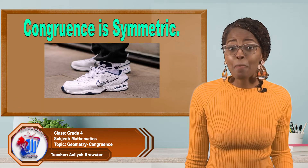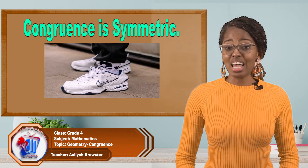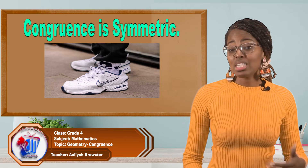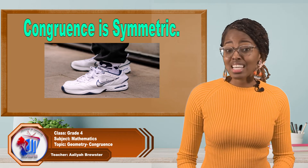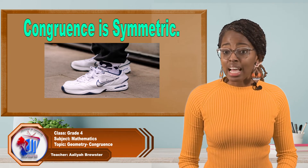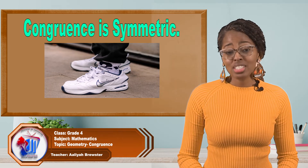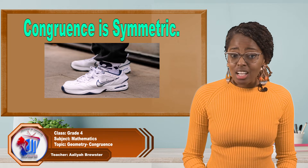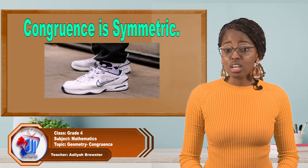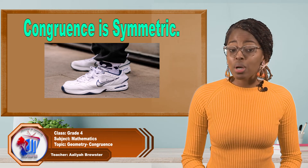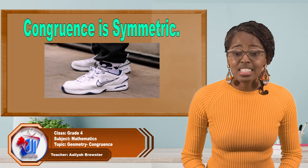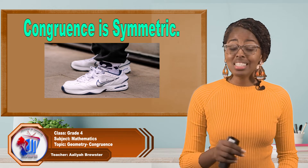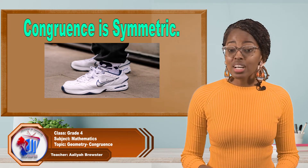Congruence is also symmetric. Imagine the following scenario: you recently saw your friend wearing some awesome sneakers. Knowing you have the same size feet as your friend, you asked what his or her size is. You then went online and found the same pair of sneakers and purchased it. The pair of new sneakers you got are evidently identical or congruent to your friend's sneakers. So, are your friend's sneakers also congruent to yours? The answer is yes. If A is congruent to B, then B is also congruent to A. This means that congruency is symmetric.